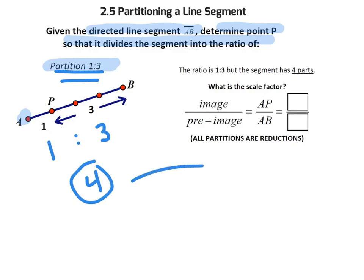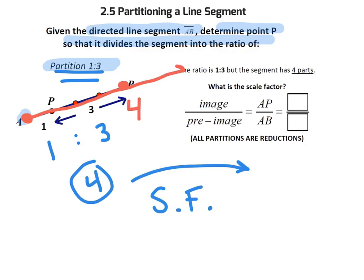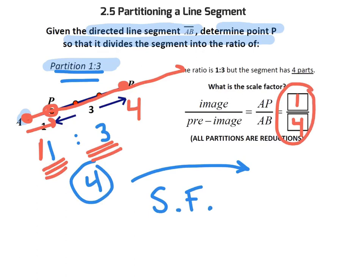I'd like to convert that ratio into a scale factor. If we think of this as a scale factor, there are 4 parts in total. When you're done, you're 1 away — that's where P would be. The scale factor would be the image, which is AP, over the original, which was 4 parts. So the partitioning ratio is 1 to 3, but the scale factor would be 1 fourth.